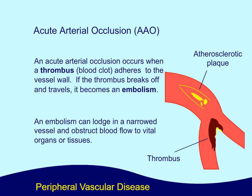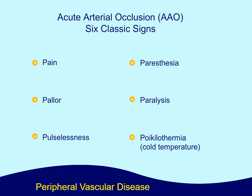Acute arterial occlusion, or AAO. An acute arterial occlusion occurs when a thrombus, or blood clot, adheres to the vessel wall. If the thrombus breaks off and travels, it becomes an embolism. An embolism can lodge in a narrowed vessel and obstruct blood flow to vital organs or tissues. Six classic signs of acute arterial occlusion include pain, pallor, pulselessness, paresthesia, paralysis, and poikilothermia, or cold temperature.